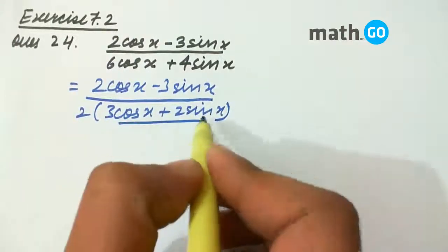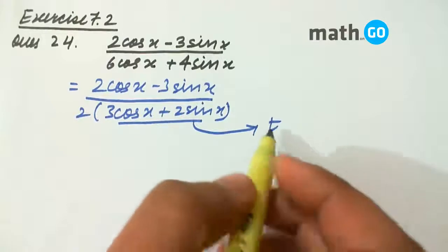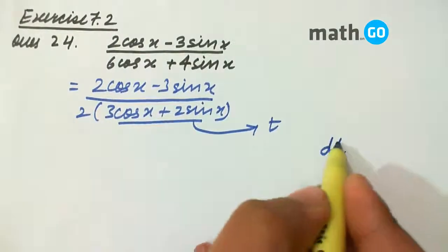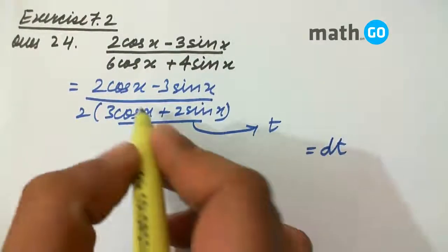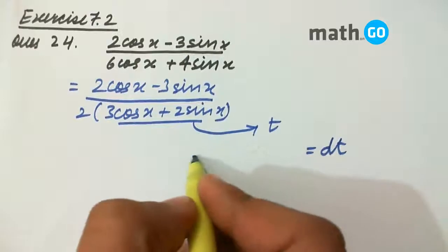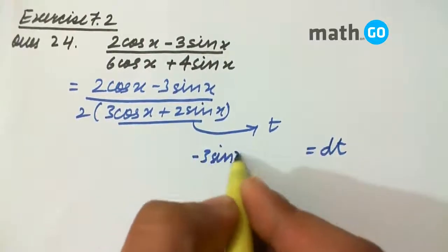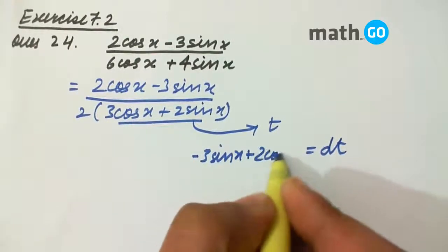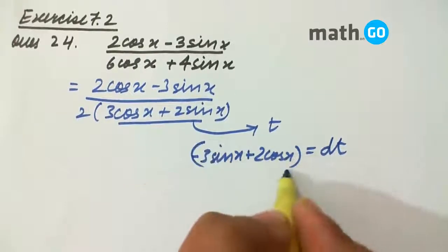If we take this expression as t, then the derivative, that is dt, will be minus 3 sin x plus 2 cos x dx.